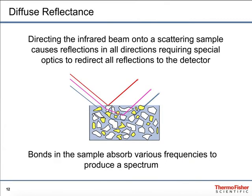The last of the four techniques is diffuse reflectance. In this case, the IR beam is directed down onto a powdered sample or an irregularly surfaced sample. The specular component — the light that's just reflected straight off — is actually ignored by the system. It's looking for the light which is scattered in other directions, where the light has penetrated down into the sample, reflected multiple times, passed through particulates of the sample, interacted and been absorbed, and then reflected out to the detection optics.